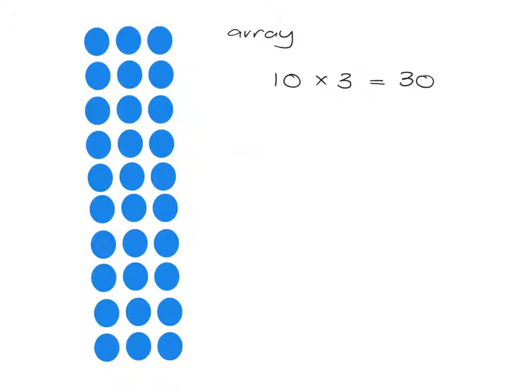Now, one of the things that this picture of the array can give me quite quickly and easily is ways to work out new multiplication facts from old. So say I don't know what 9 lots of 3 is, what 9 times 3 is. Well, because I know that 10 lots of 3 is 30...